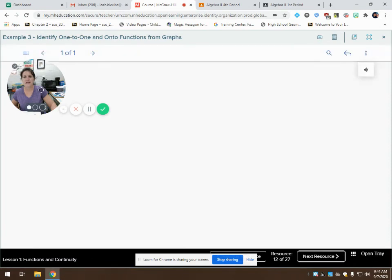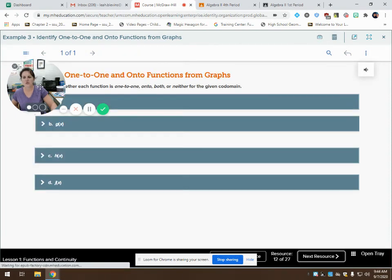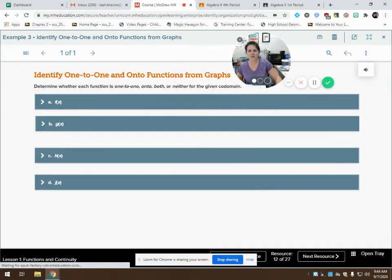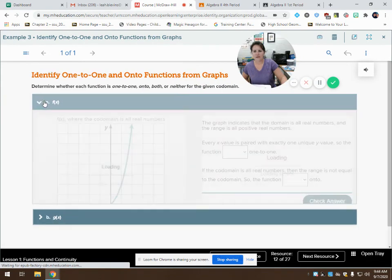Example three. Identify one-to-one and onto functions by looking at the graph. So, is this function one-to-one? Does each x value go to a different y value? So, looking at this, the graph indicates that the domain, my x values, is all real numbers. But my range looks like it starts at zero and goes above.